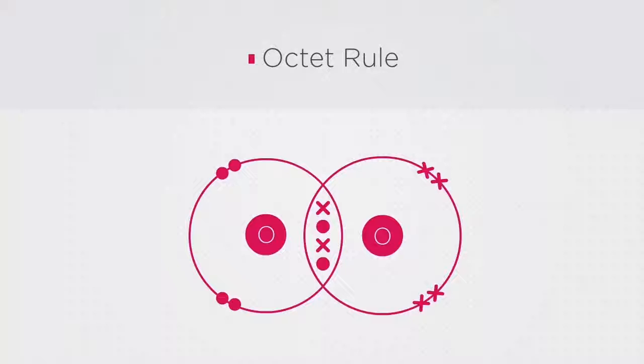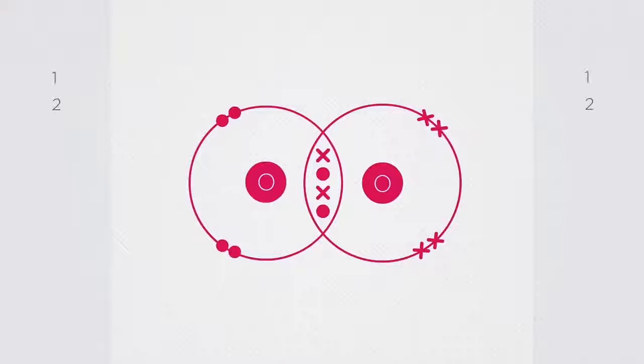If you count the number of electrons in each shell, you should notice that each shell has eight electrons shared over two shells, shown by the dots for one oxygen atom and crosses for the other, which is the ideal whenever you draw a dot and cross diagram.